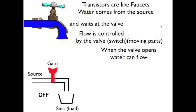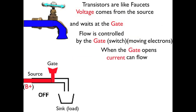Transistors are a lot like faucets, but instead of water, we have voltage that comes from the source, and the voltage waits at the gate like the water waited at the valve. Now the flow of this voltage is controlled by the gate, but instead of having moving parts, we have moving electrons. And then when the valve opens, or the gate opens in a transistor, current can flow.